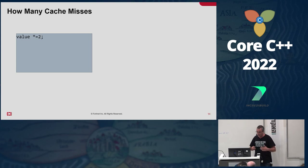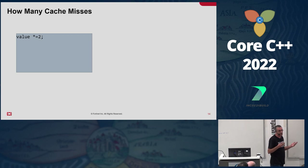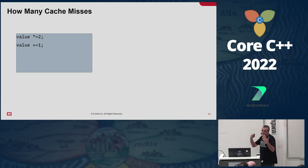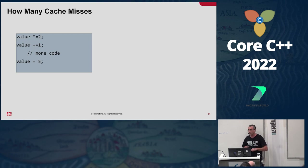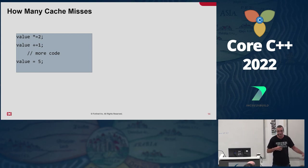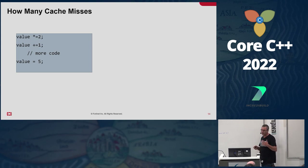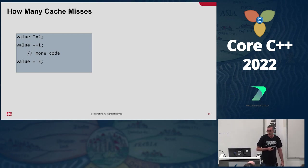We have a variable called 'value' and we multiply it by two. We have no reason to believe that it's already in our cache, and therefore we have to assume it's a cache miss. We now add one to it — we just touched this, so it's probably still in our cache line, and therefore we can safely assume it's a cache hit. We execute a few more lines of code and then set this value to five. We cannot really say if it's a cache hit or miss — it depends on what hides behind this comment. If it's a very small amount of code, it's probably still in the cache; if it's a lot of code, it's probably been evacuated and it's a cache miss.